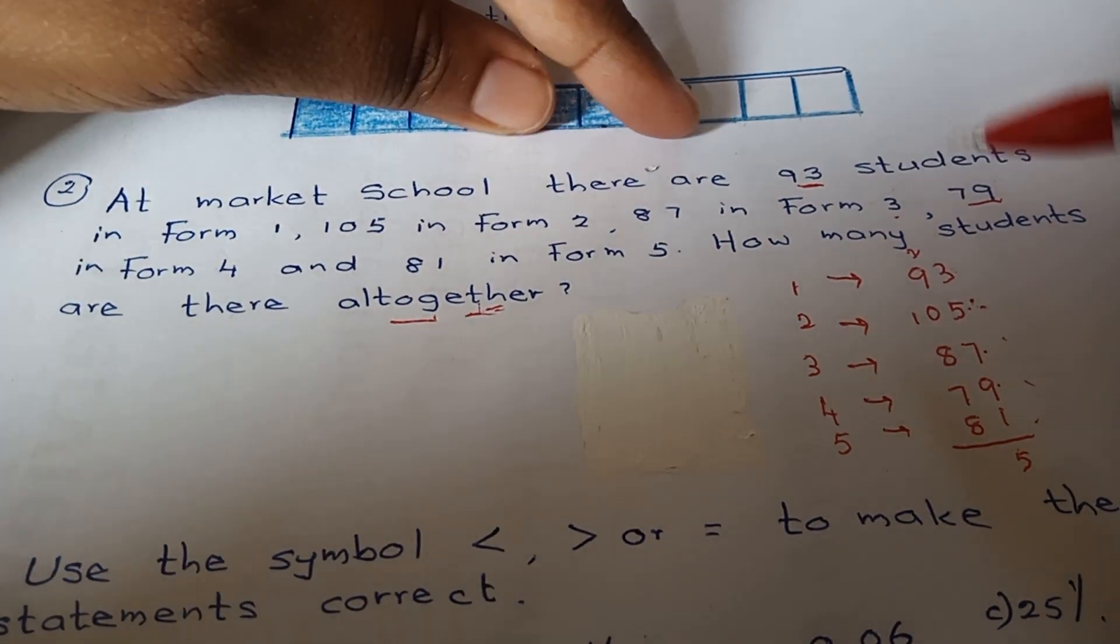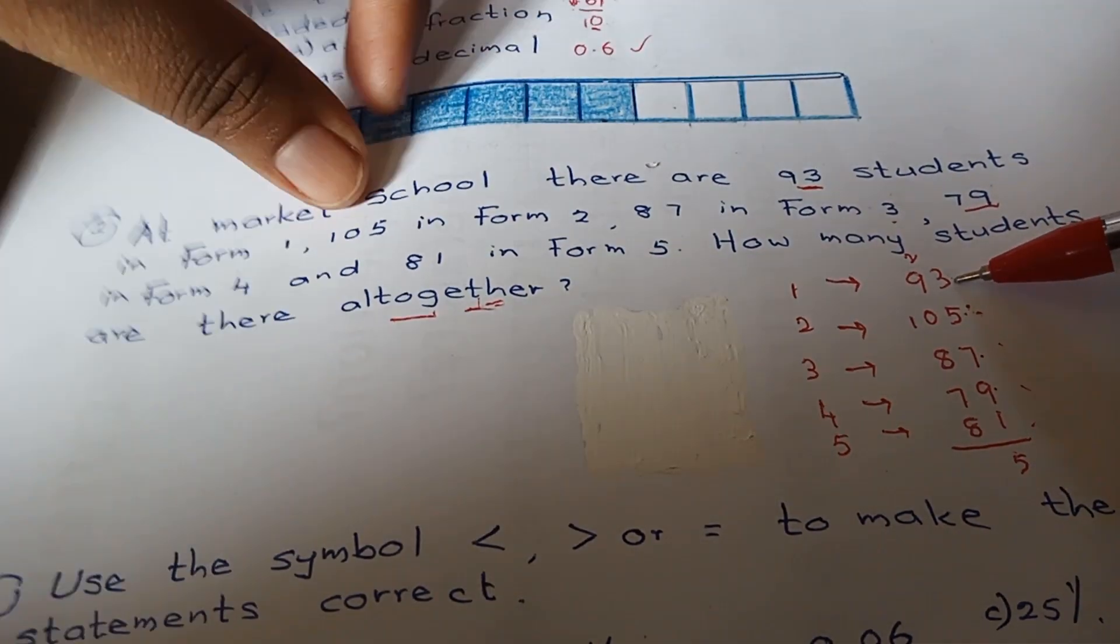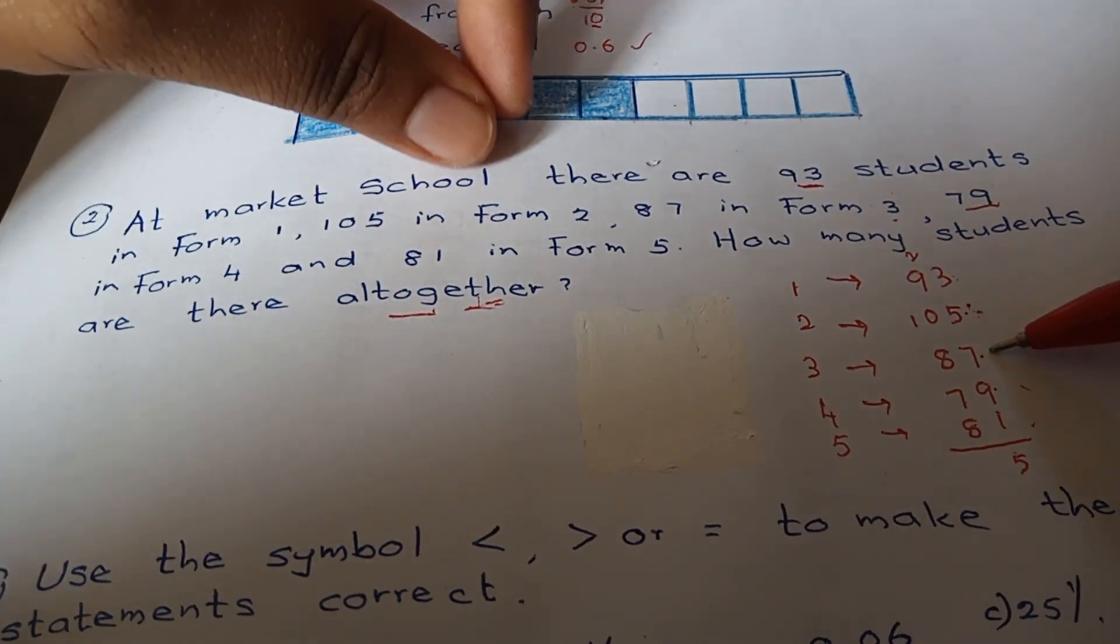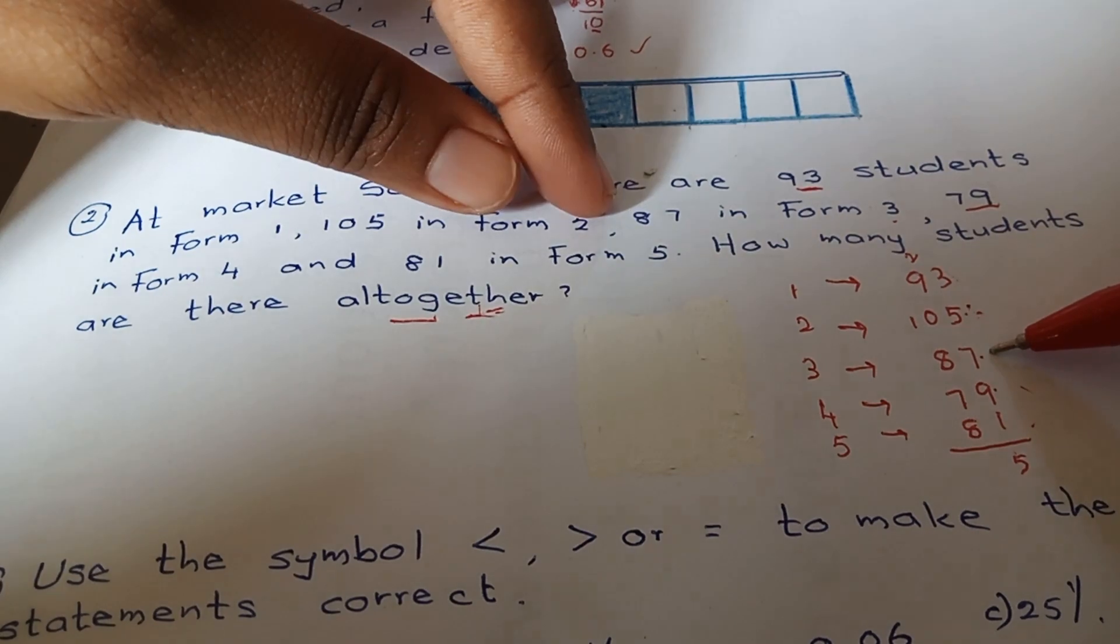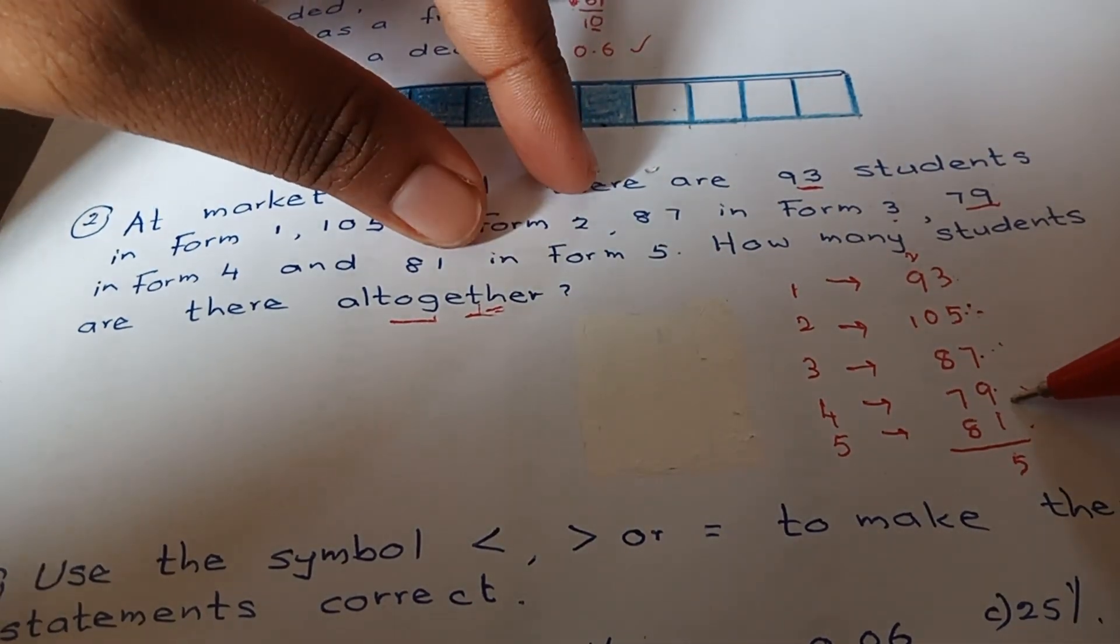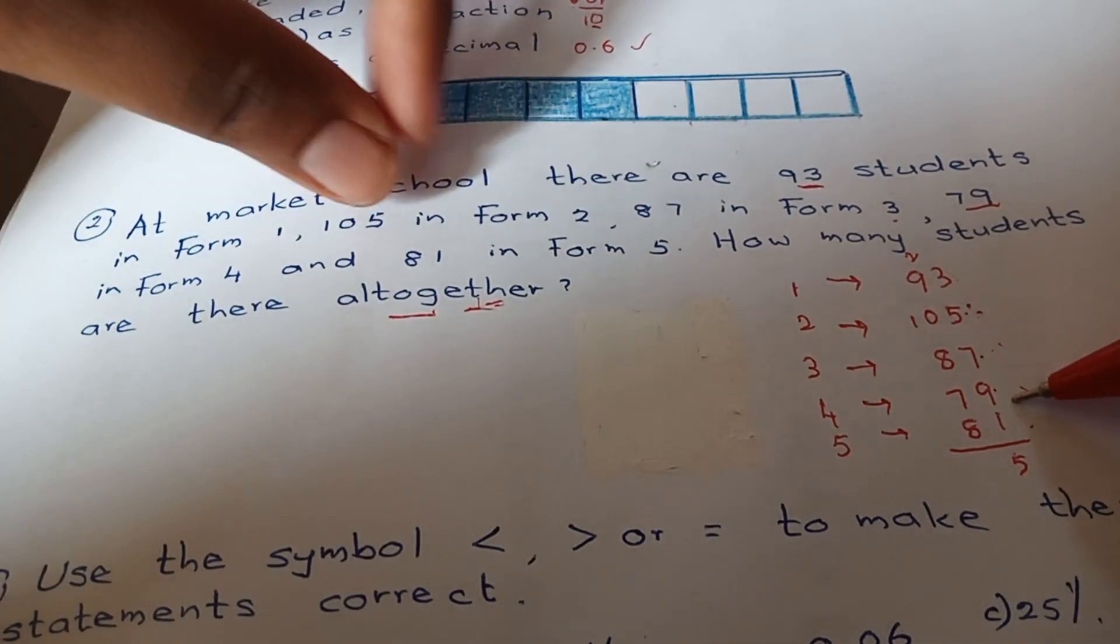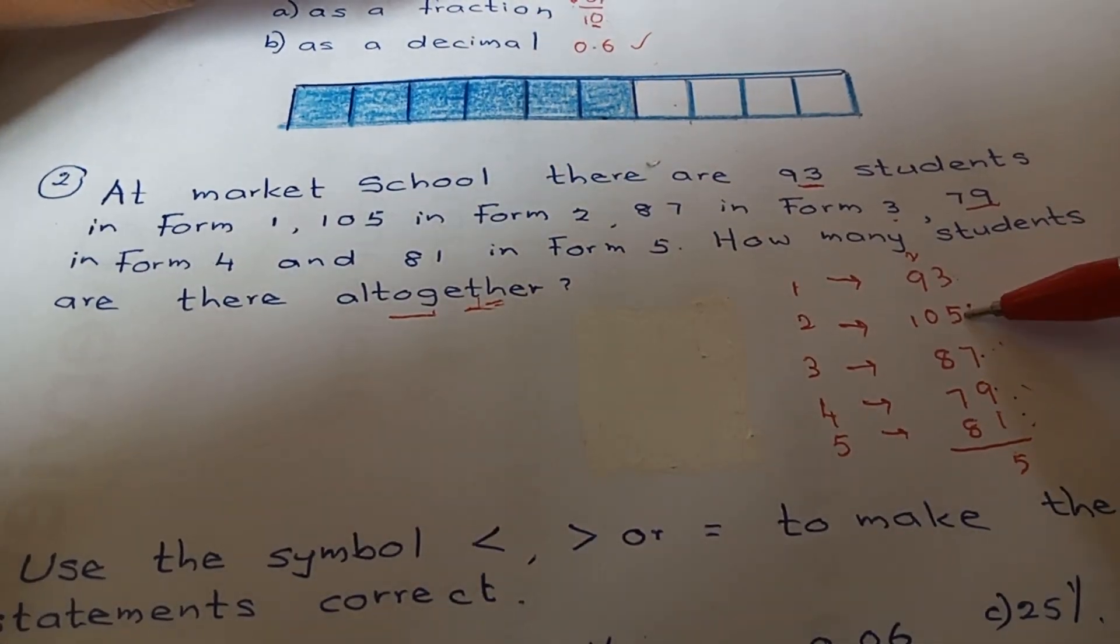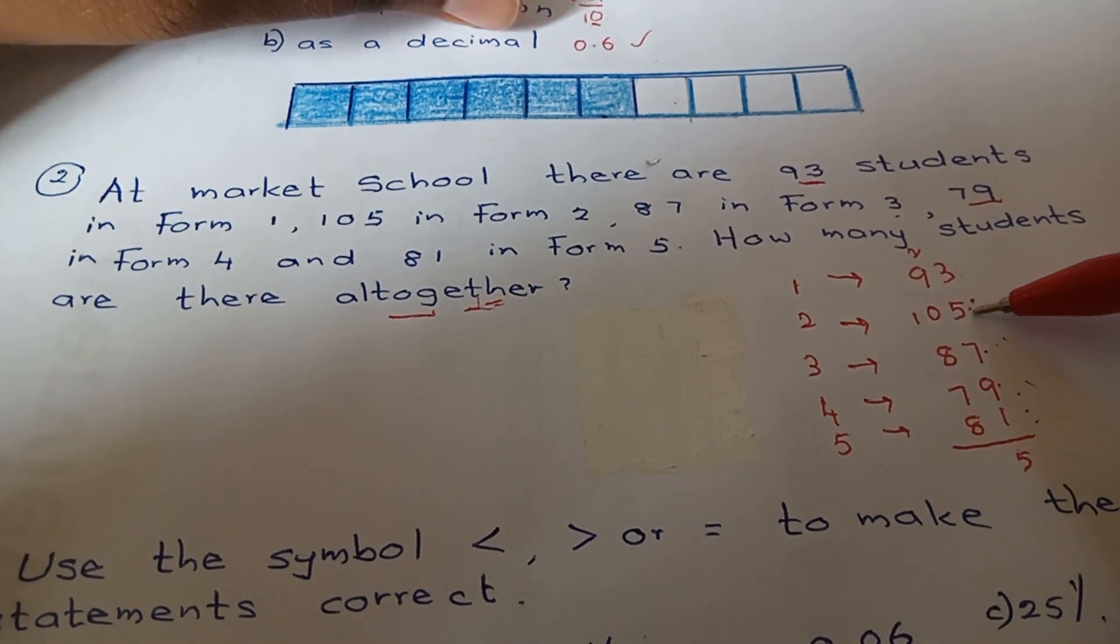So let's add. Form 1 there are 93 students, Form 2 there are 105 students, Form 3 there are 87 students, Form 4 there are 79 students, Form 5 there are 81 students. So let's add: 3 plus 5 is 8, 8 plus 7 is 15, 15 plus 9 is 24, 24 plus 1 is 25.